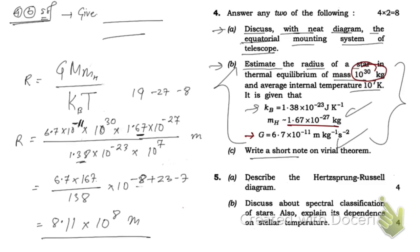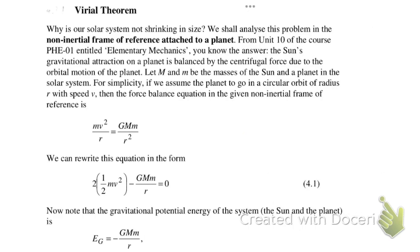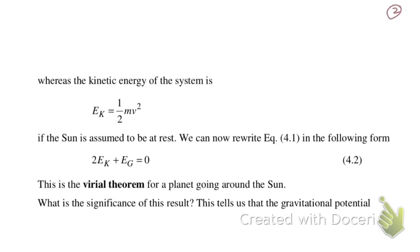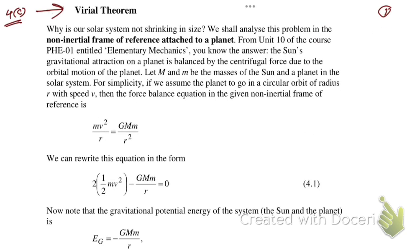Now we need to write short notes on the Virial Theorem for question number 4C. Here is the answer — this is the first piece, and this is the second and last piece. First write this one, then this one.